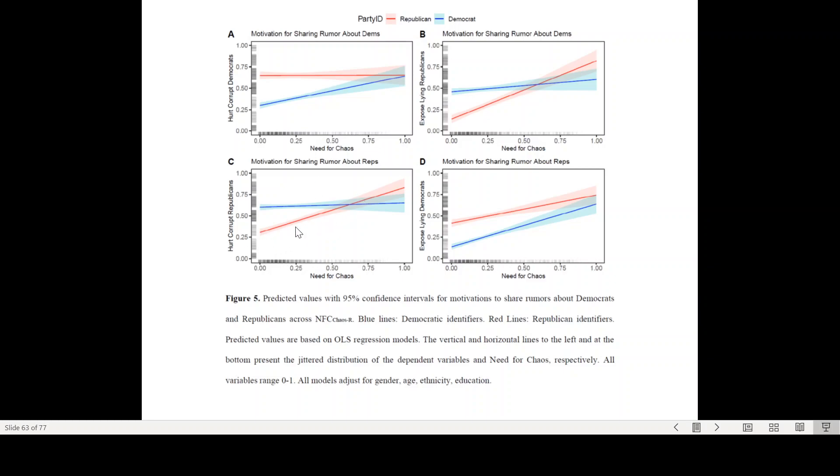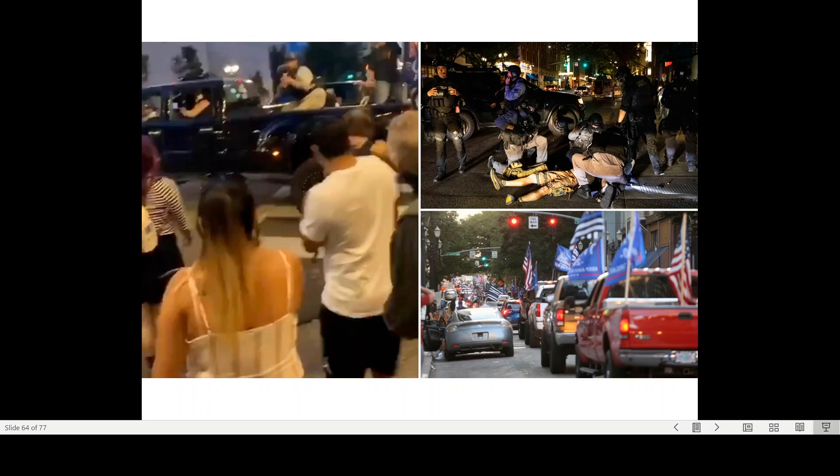But the same process also happens among Republicans. So again, if you're a Democrat, obviously you're more interested in getting rid of these corrupt Republicans. But if you are Republican, you typically would want to protect your party, right? But not if you're high on need for chaos. If you're high on need for chaos, you are going to share information that's going to hurt other Republicans because implicitly this will undermine the system and will open chances for you to rise through the social ranks. So the argument here is that these dynamics, marginalized disenfranchised individuals that are ready for violent action, are now mobilized.